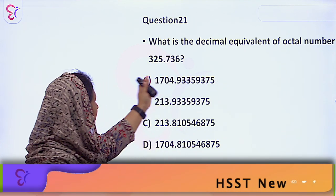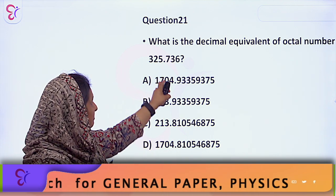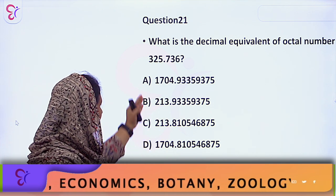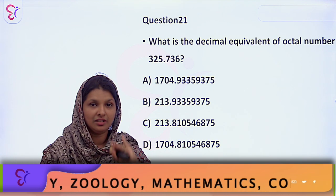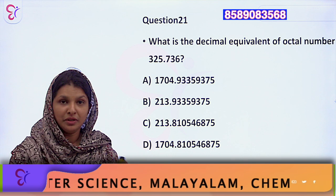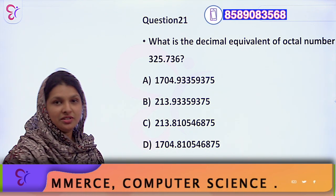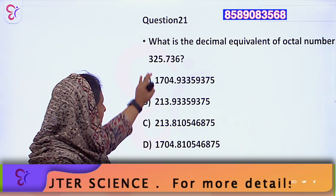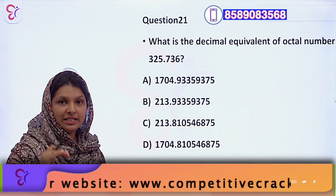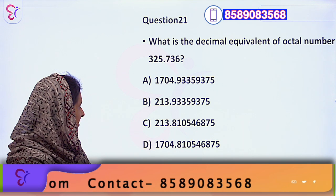Question 21: What is the decimal equivalent of octal number 325.736? You can see options A, B, C, D. You can learn how to convert to decimal equivalent of an octal number — how to convert decimal, binary, and all different conversions. You have to learn the details. Using powers of 8, we can calculate the answer: Option A.